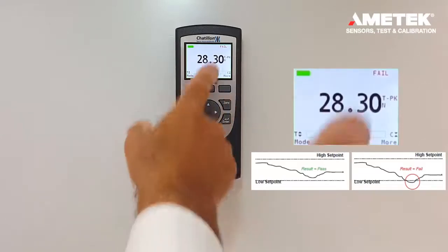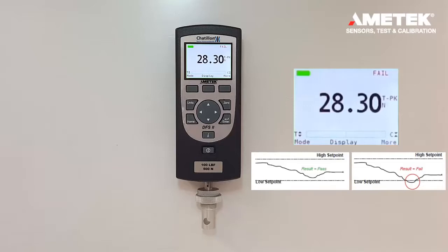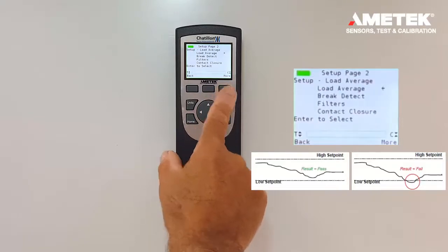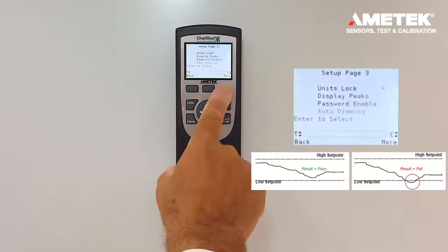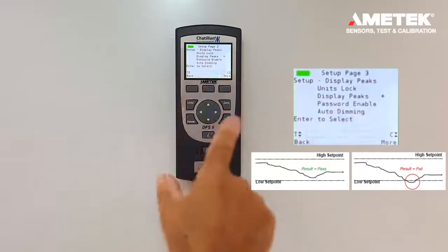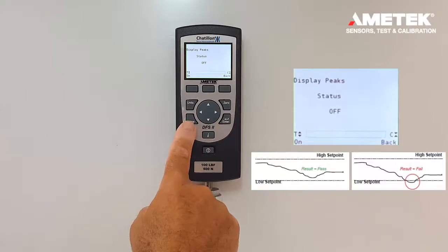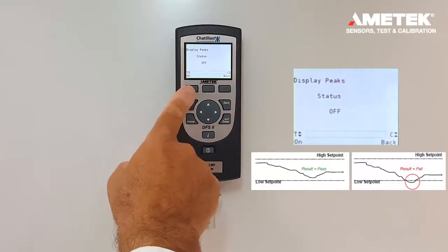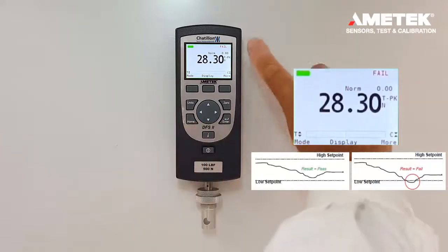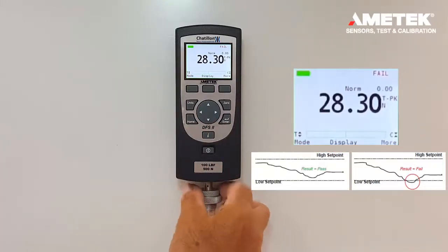Now if you decide you want to know exactly on the real values you are measuring you can always go back to more press the F3 button multiple times until we have display peaks. And if you select display peaks, press enter and then press F1 to turn the peaks on and go back home. You will see now that you always have the normal value being displayed. So this is very helpful if you want to always know at what load you're at.